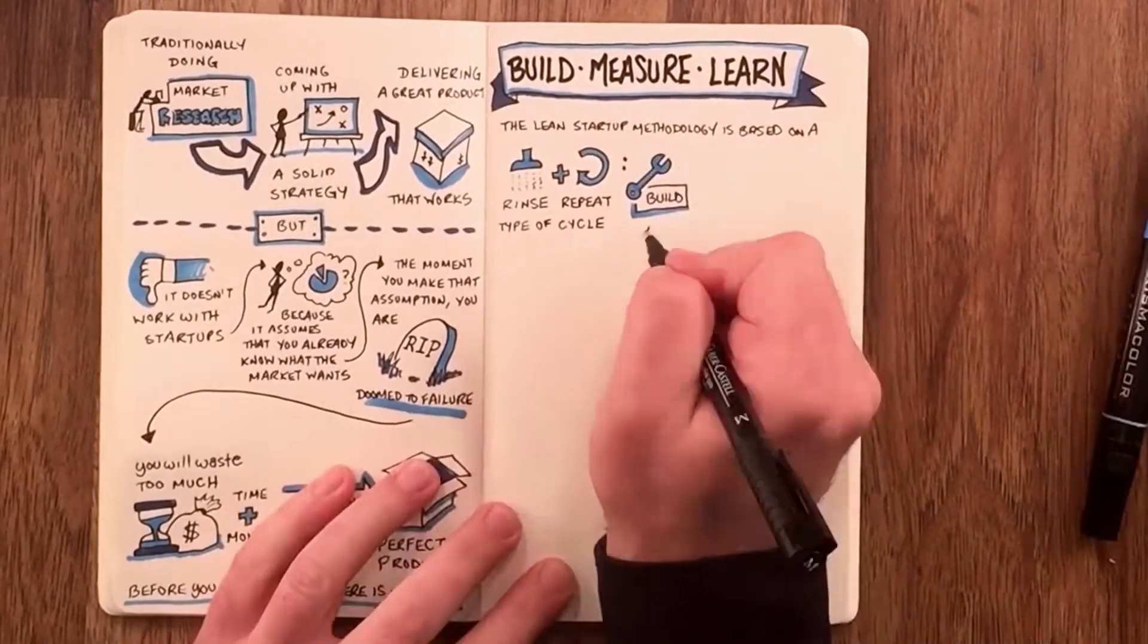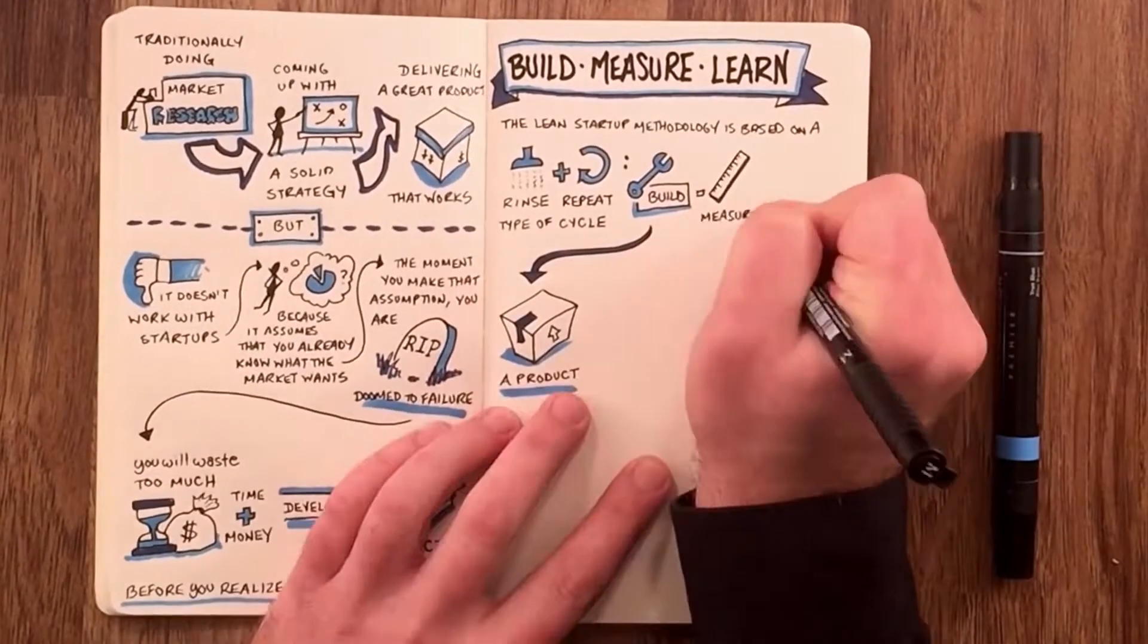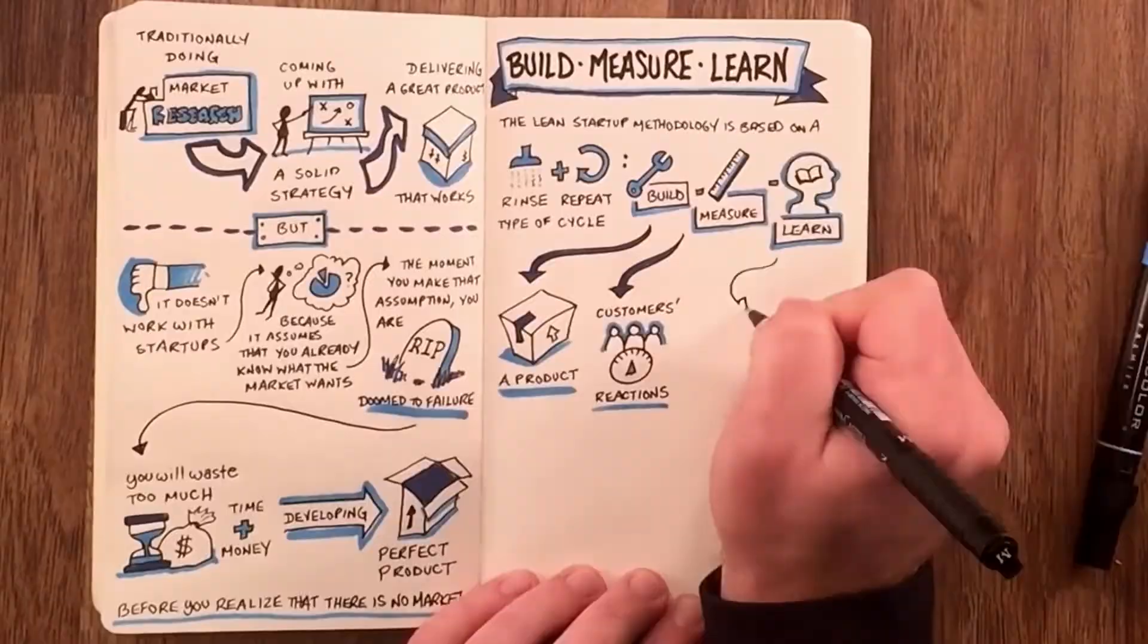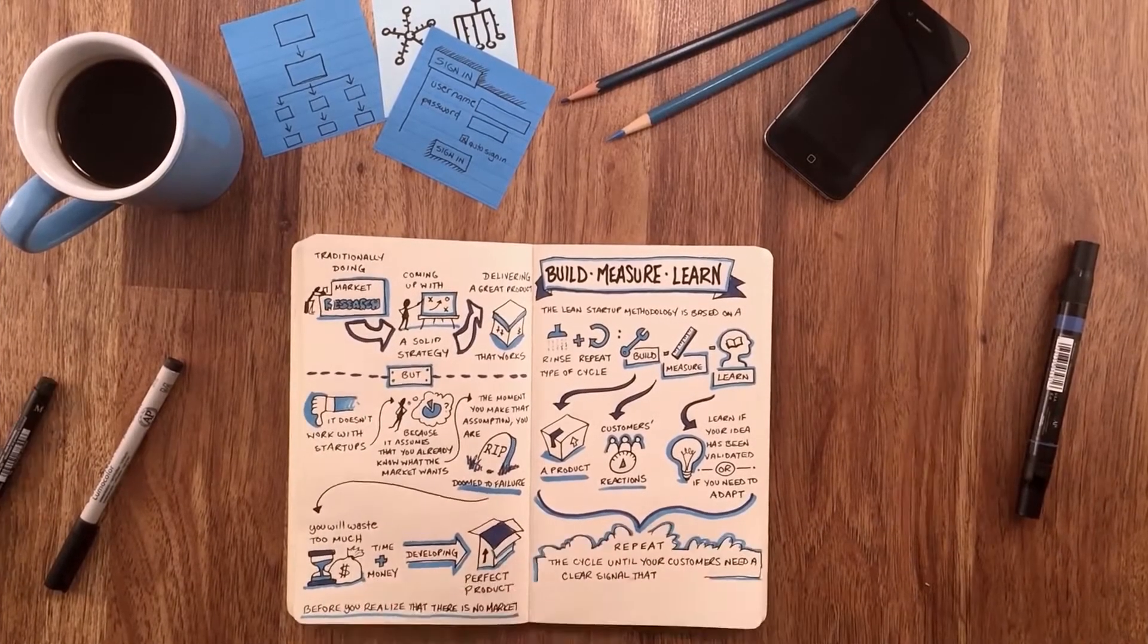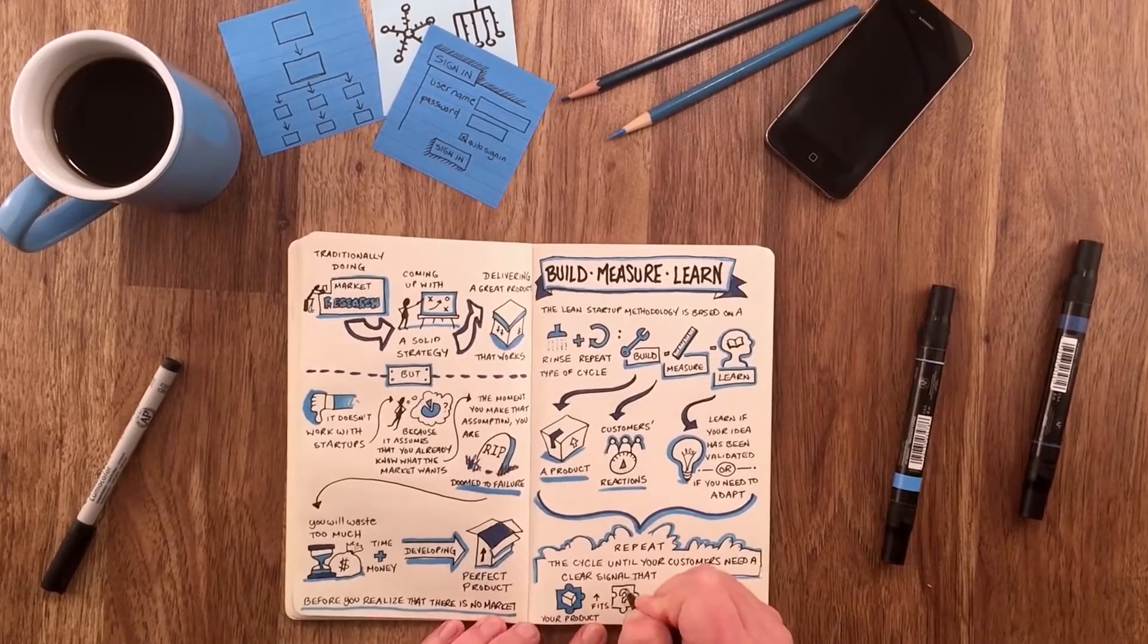The Lean Startup methodology is based on a rinse and repeat type of cycle: Build-Measure-Learn. Build a product, measure your customers' reactions, and learn if your idea has been validated or if you need to adapt. Repeat the cycle until your customers send you a clear signal that your product fits a market need—the much coveted product-market fit.